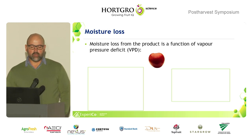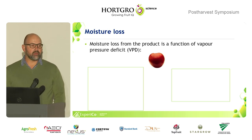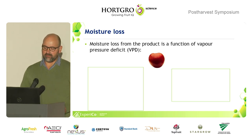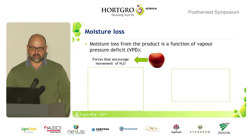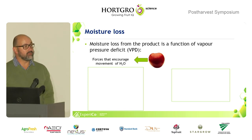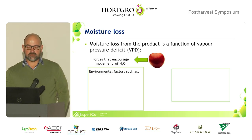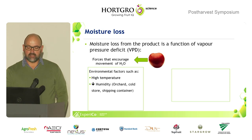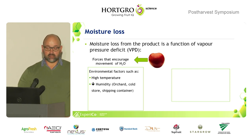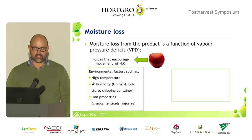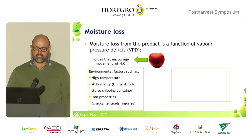Moisture loss from a product is a function of the vapor pressure deficit. There are forces that encourage the movement of water out of the fruit: environmental factors such as high temperatures, low humidity in orchards, cold stores and shipping containers, and also the skin properties of your fruit — cracks, lenticell openings, and injuries.